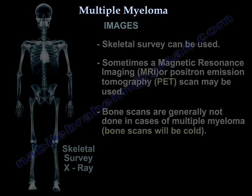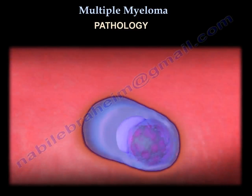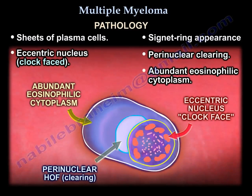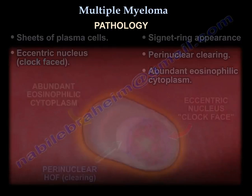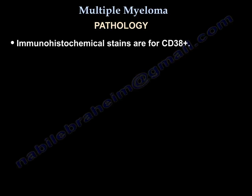On pathology, you find sheets of plasma cells with a signet ring appearance, eccentric nucleus, clock-face nucleus, perinuclear clearing, and abundant eosinophilic cytoplasm. Immunostaining is positive for CD38.